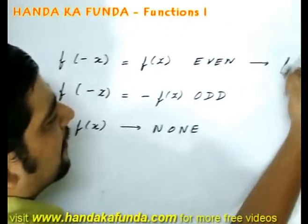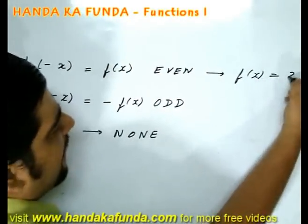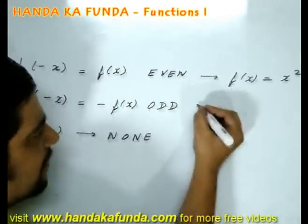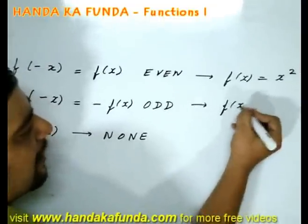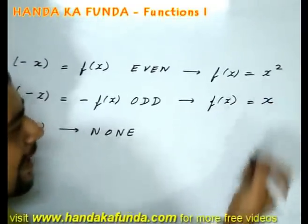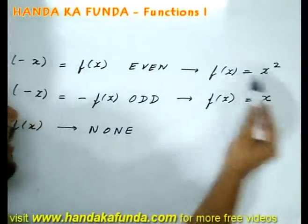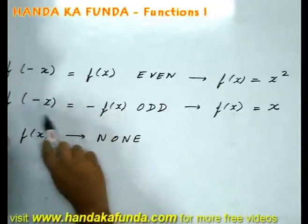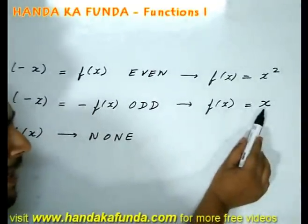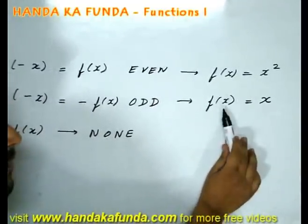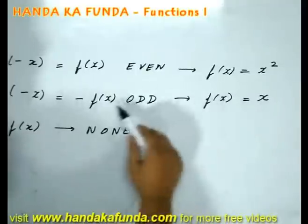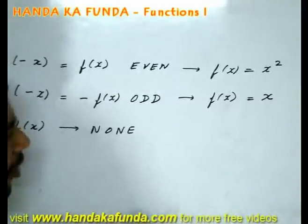An example of an even function would simply be f(x) equals x squared, whereas an odd function would be f(x) equals x. Think about it: x squared, if I replace x with minus x, what will I get? It will remain x squared, so both of them are equal. If I replace x with minus x in f(x) = x, f(x) will become minus x, or minus f(x). This will be an odd function.